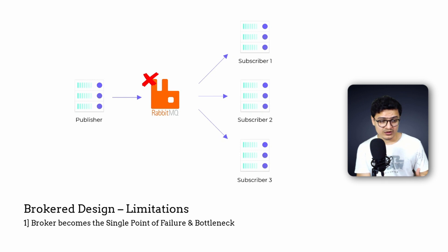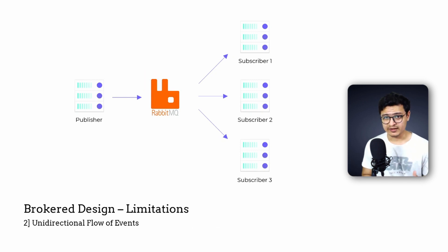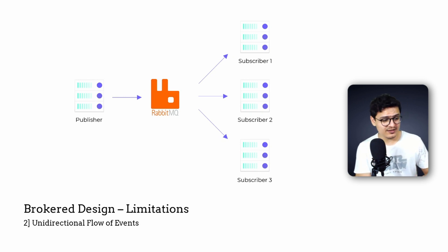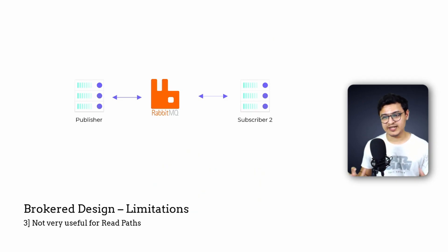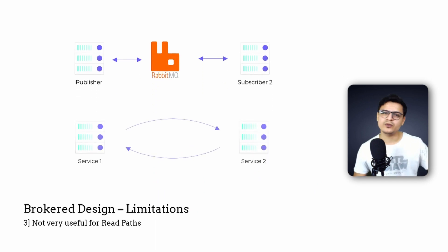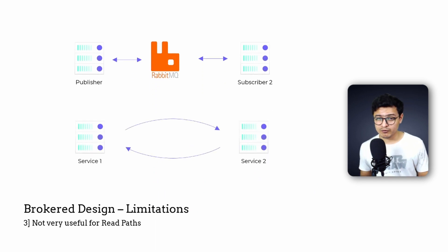The broker also becomes a bottleneck, limiting the maximum number of events that can flow through our system. Second, implementing rollback when a consumer has an error is very difficult, because eventing is a one-way street — events flow in one direction, and once an event is propagated, there is very little the source can do. In a brokerless design you could wait for the API call to return and take a rollback action. Finally, eventing doesn't really help for read paths — you can do things like RPC on RabbitMQ, but you're not gaining a lot of value there.